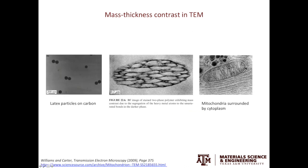Let's look at a few examples where mass thickness gives contrast. The example on the left is from the textbook — latex particles on carbon. Where the latex particles are sitting, the sample is thicker, and they appear darker. The example in the middle is a two-phase polymer stained by heavy metal atoms; only one phase is chemically bonded with the metal ions and appears darker due to higher Z. The example on the right is mitochondria surrounded by cytoplasm, where membranes are stained by heavy metal atoms, giving contrast from higher Z.